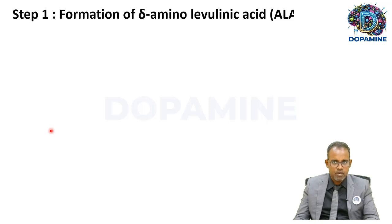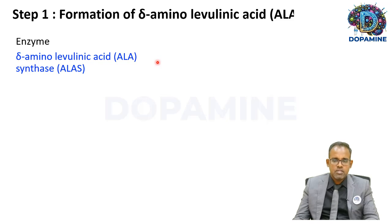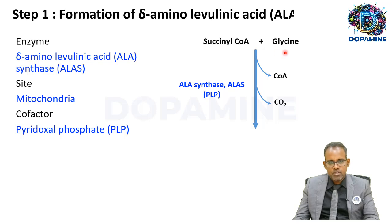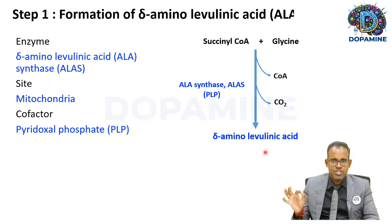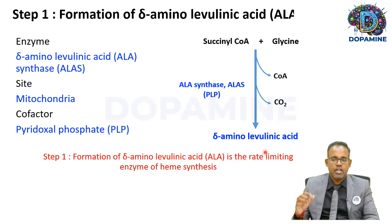We will cover the clinically relevant steps. Step one is the formation of delta-aminolevulinic acid (ALA). The enzyme responsible is ALA synthase, located in the mitochondria. It requires pyridoxal phosphate (PLP) as a cofactor. Succinyl-CoA combines with glycine in the presence of ALA synthase to form ALA. This is the first and rate-limiting step of heme synthesis — ALA synthase is the rate-limiting enzyme and this is the committed step.